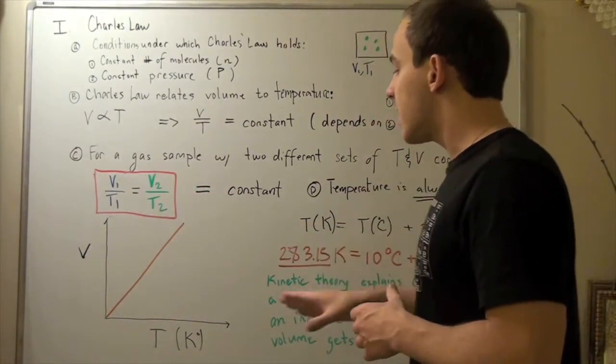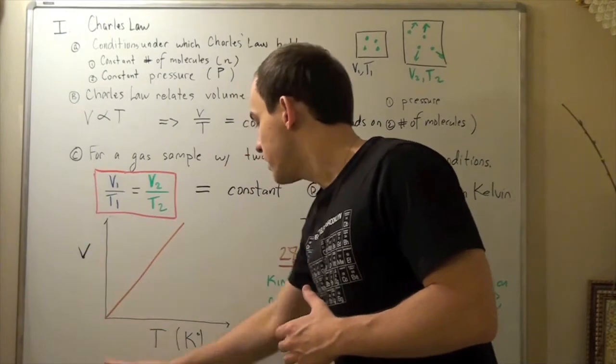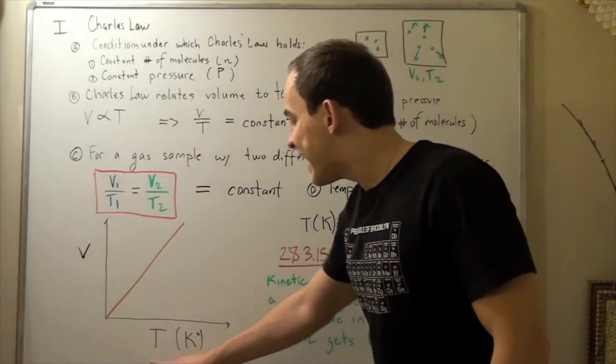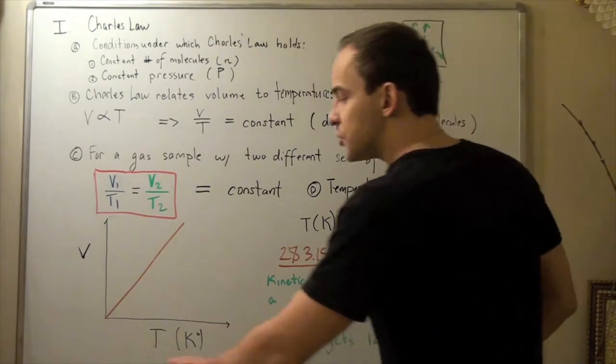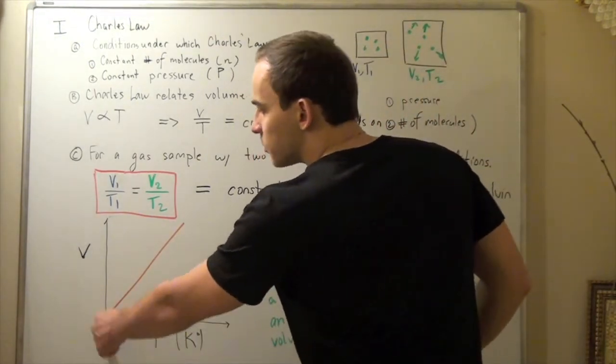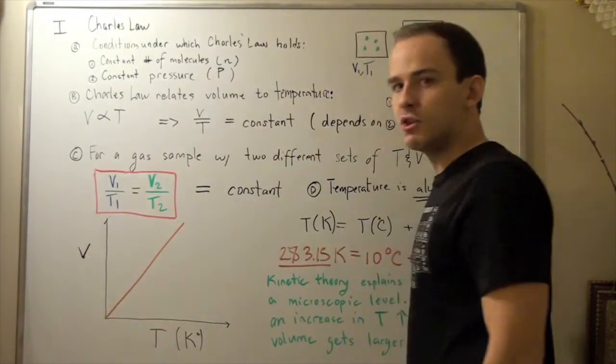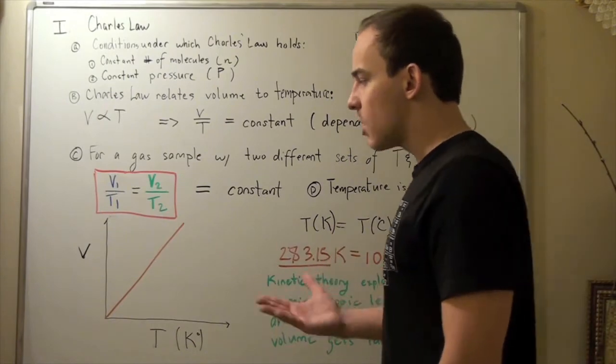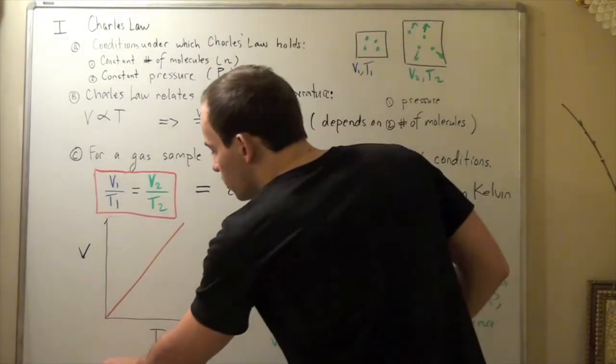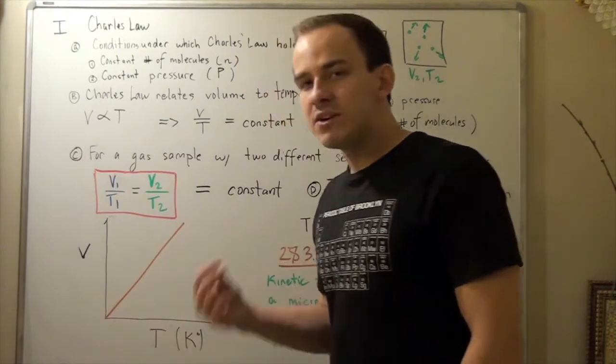Let's look at the graph of volume times our temperature. Temperature here is in Kelvin, so our origin is at zero, zero. Remember, we can't have negative volume. Our smallest volume is zero, so we can't go below this. Our temperature in Kelvin is zero.